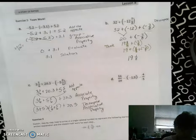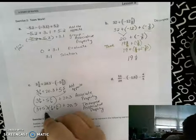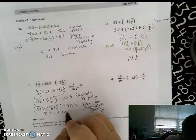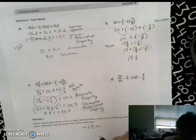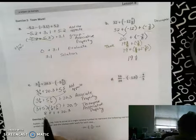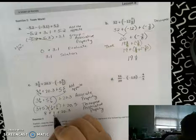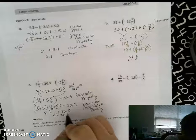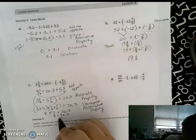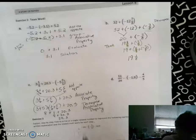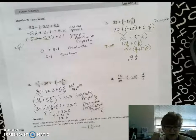So now I have 8 plus 1 plus 20 and 3/10ths. So 8 plus 1 is 9 plus 20 and 3/10ths is 29 and 3/10ths.